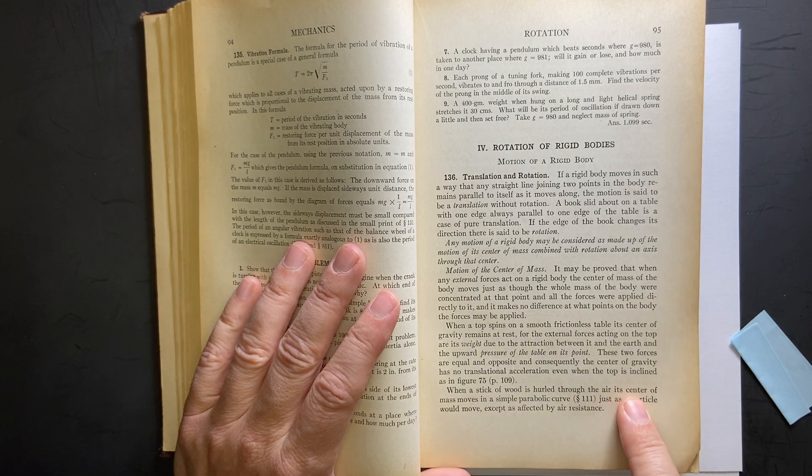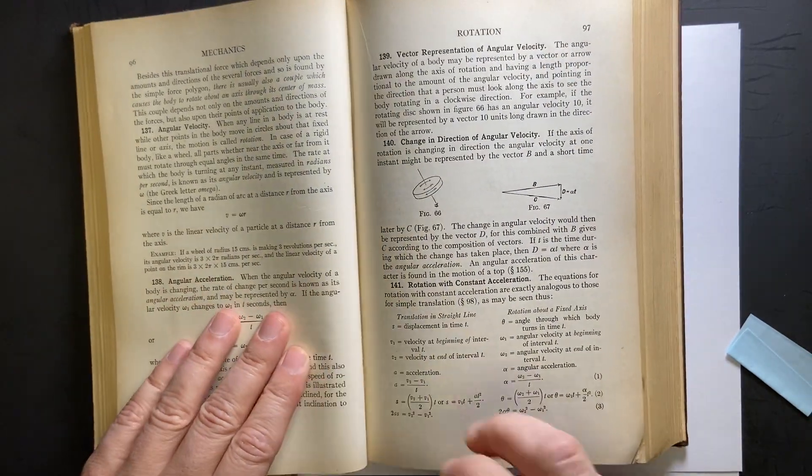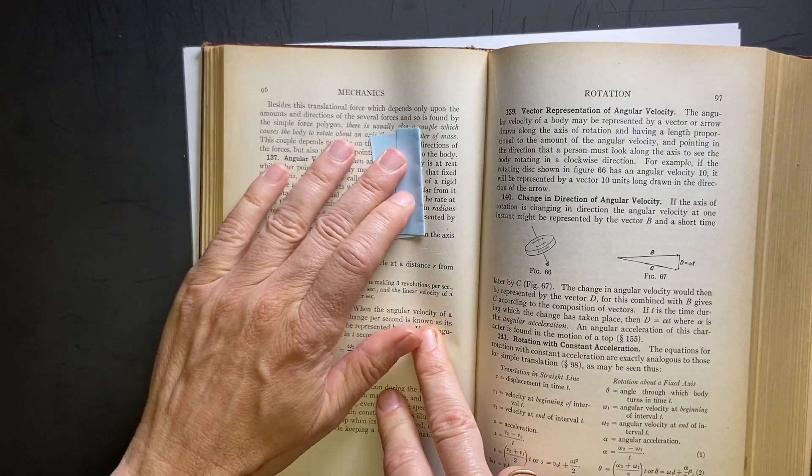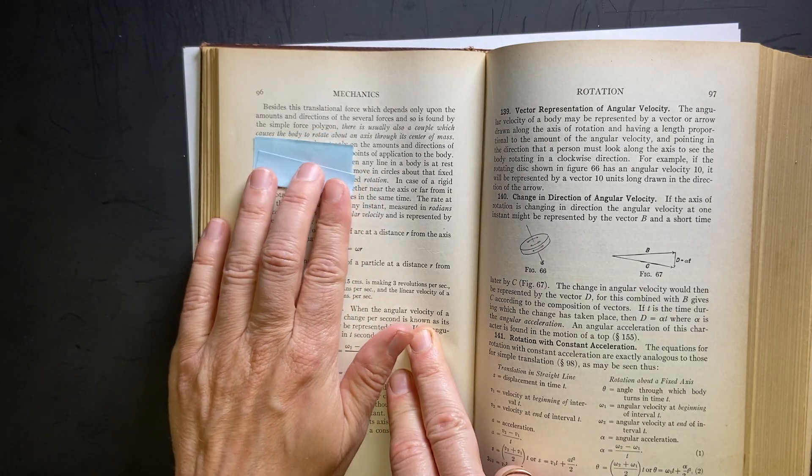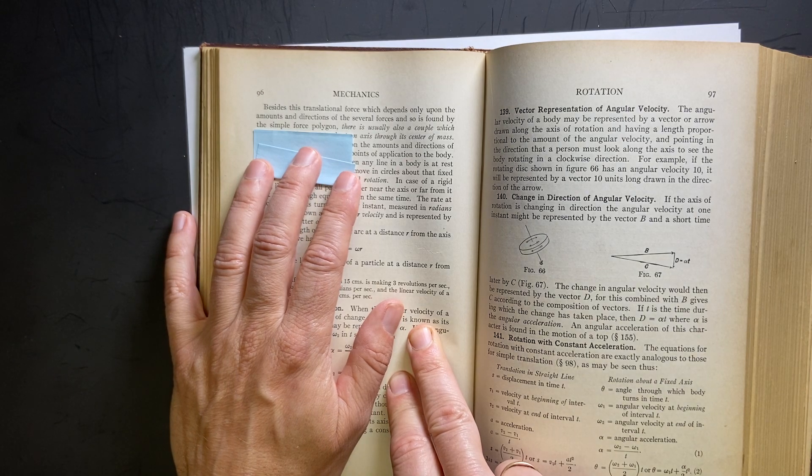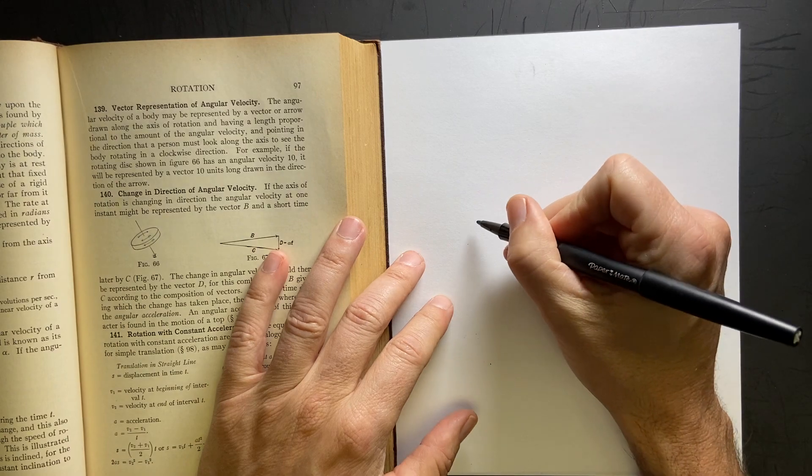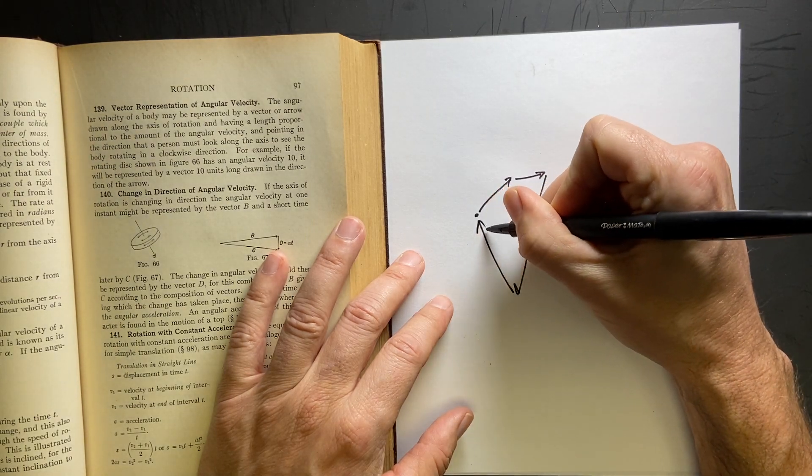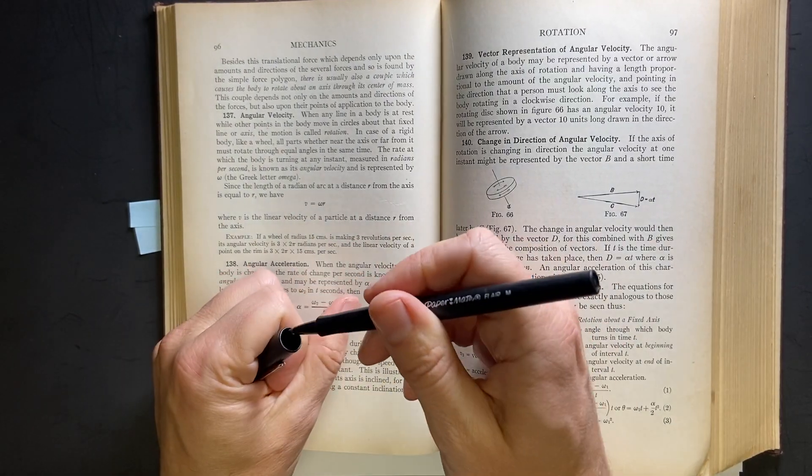When a stick of wood is hurled through the air, its center of mass moves in a simple parabolic curve. Okay. That's good. Let's see. Besides the translational force, which depends upon the amounts and directions of several forces, is so found by the simple force polygon. Oh. Simple... I think the simple force polygon, I suspect if I look back, this is their way of doing a graphical addition of forces. So, let's just... If I have three forces, or four forces, and those forces add up to zero, so it's an equilibrium, you could do this. And that's a polygon, the fourth polygon. I'm just guessing. I'm not sure. That's just my guess. I'm going to put my cap on because I don't want to write on it.